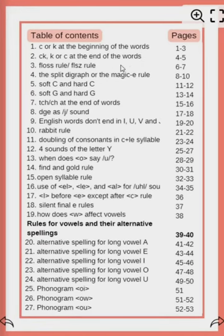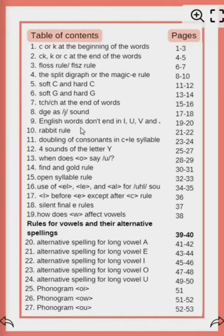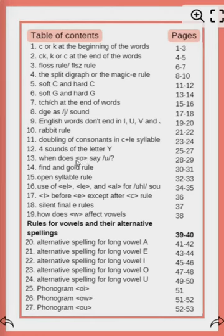At the end of the words: the floss rule, the split digraph or the magic E, soft C and soft G rule, TCH and CH at the end of the words, DGE as J sound, English WA doing, and I, U, V and J, rabbit rule, doubling of consonant in C-plus-LE syllable.